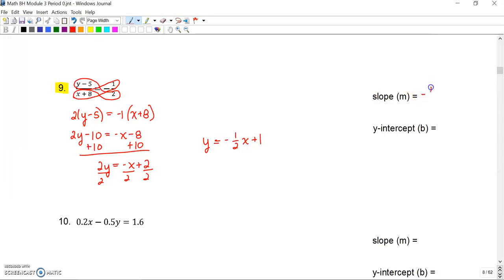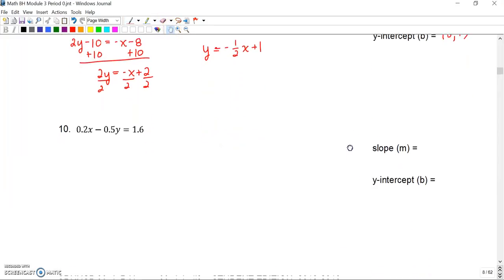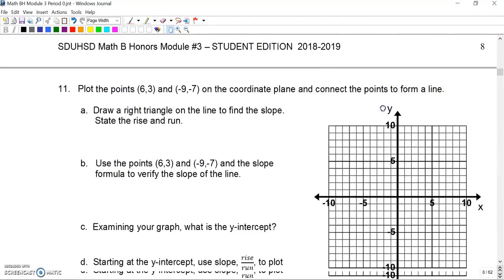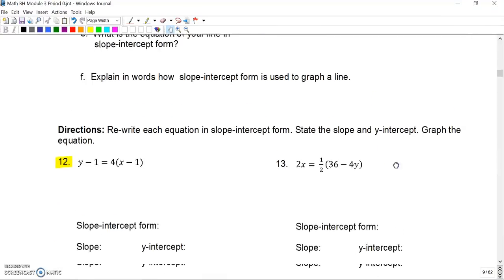We'll divide all terms by 2 to get y equals negative 1/2 x plus 1. That would mean that my slope is negative 1/2. My y-intercept is (0, 1). Again, writing those y-intercepts as ordered pairs. Again, I'm going to skip ahead. You're going to fill out these as well as the ones I've done.